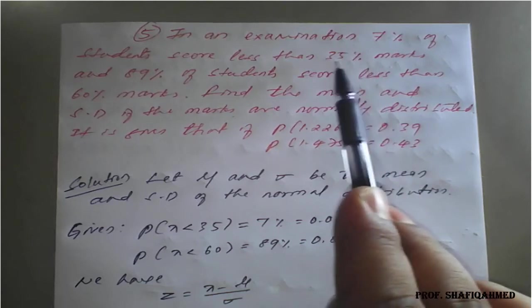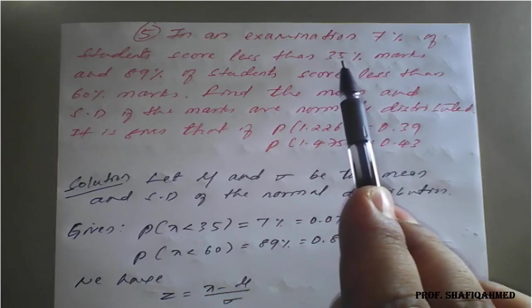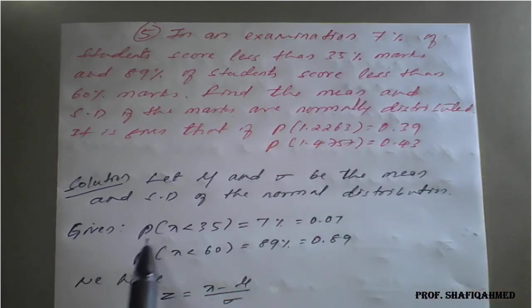You have to, out of 100, they have taken how much here? 35 marks. So that's why it is P of X less than 35 is how much here? 7% which is nothing but 0.07.